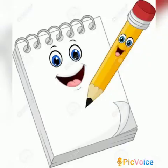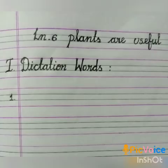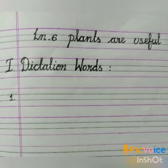So dear children, now let us take your EVS notebook and your pencil. Take a new page and write in the first line the chapter number and its name: Lesson 6, Plants are Useful. Write in the second line Roman numeral 1, Dictation Words.